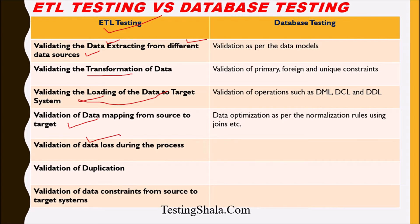Another validation is checking for duplication. When moving data from source to destination, you should ensure there is no loss of data and also no duplication of data. Additionally, we will be validating data constraints from source to target systems — whatever constraints exist in the source should carry over to the target system. These are some of the important validations in ETL testing.